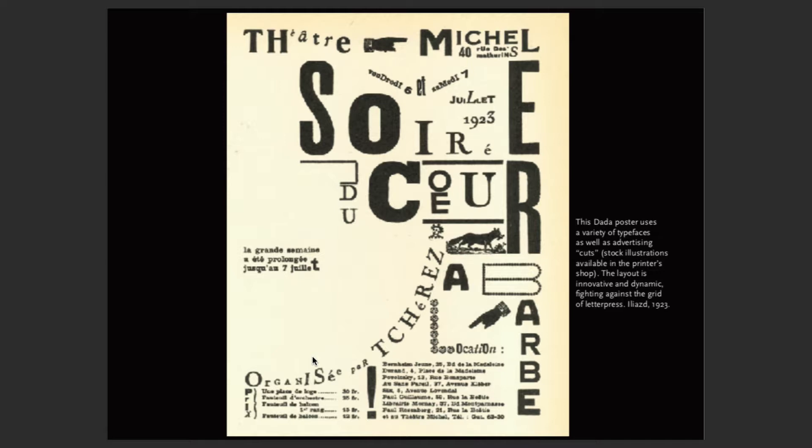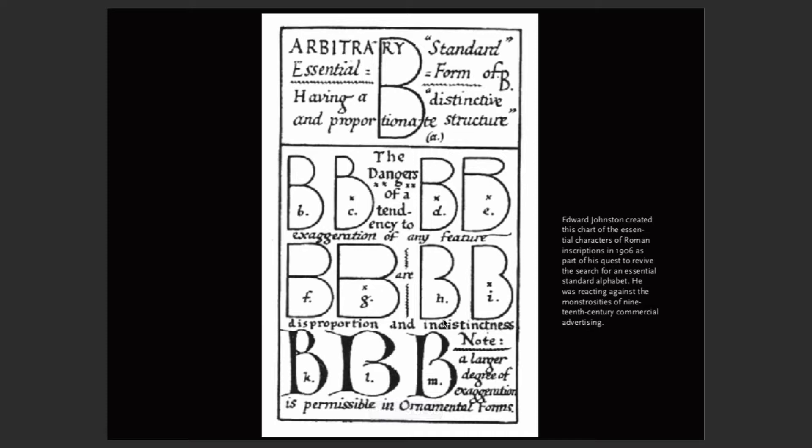Reform and revolution: Edward Johnston created a chart of essential characters of Roman inscription in 1906, in his quest to revive the search for an essential standard alphabet. This idea of standardization plays on universality, which is a tricky, dangerous idea — because we all don't read or understand things the same way. So this idea of a standard could potentially be problematic.